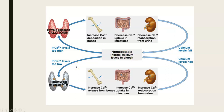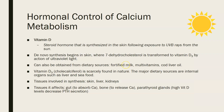If calcium levels are too low, the four parathyroid glands on the back of the thyroid sense the drop and release parathyroid hormone (PTH). PTH breaks down hydroxyapatite crystals in bone to release stored calcium into the blood, increases calcium uptake in the intestines (requiring vitamin D), and increases calcium reabsorption from the kidneys — all together raising blood calcium back to homeostasis.